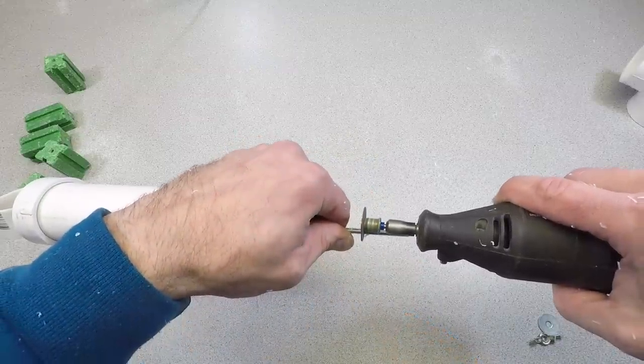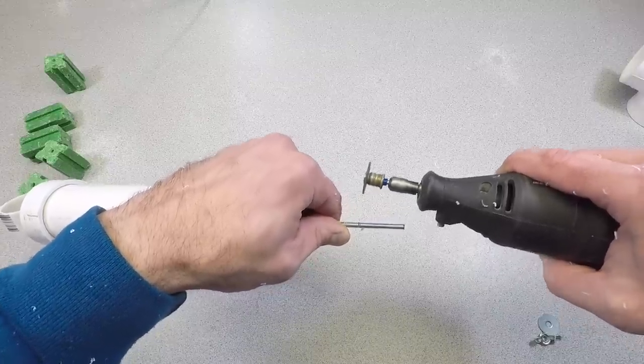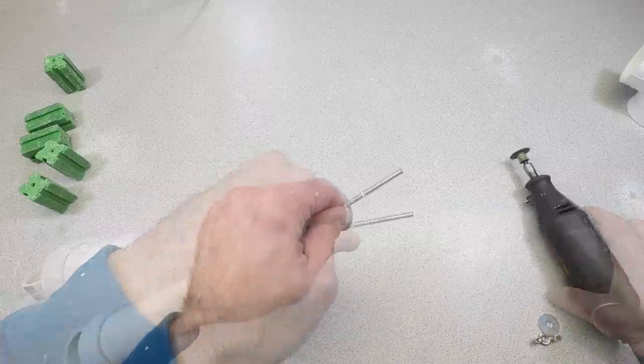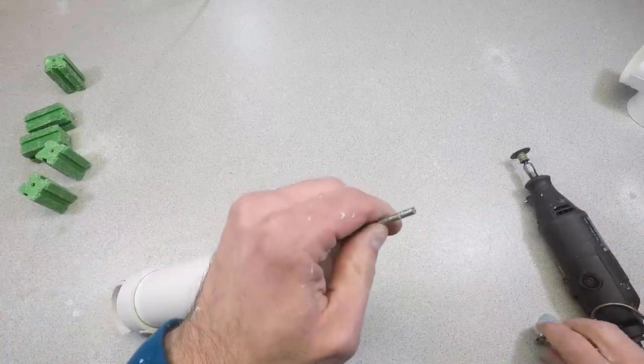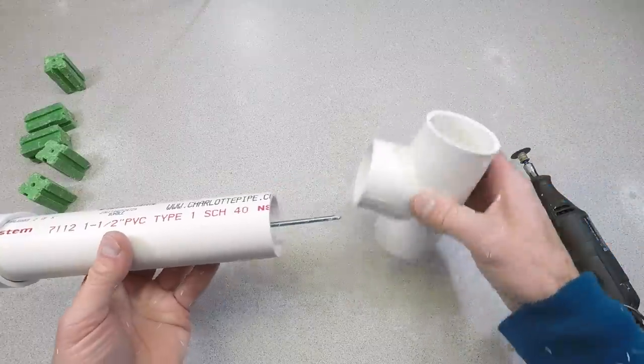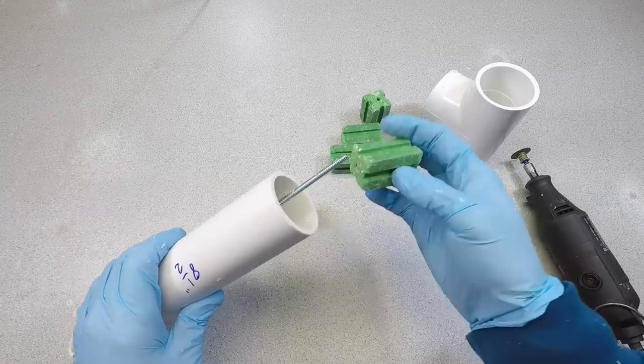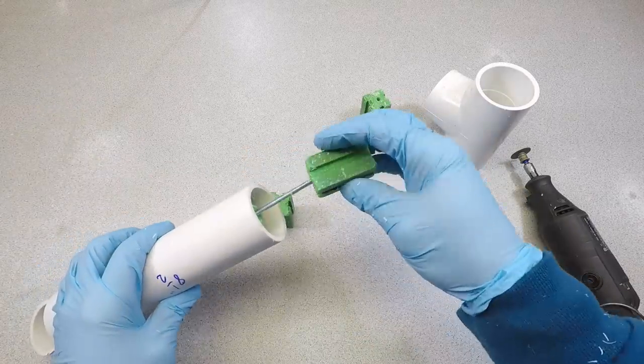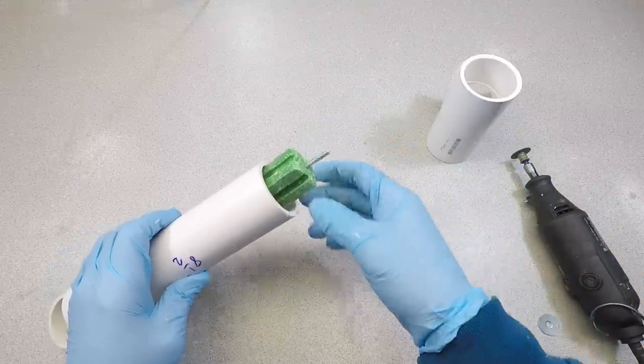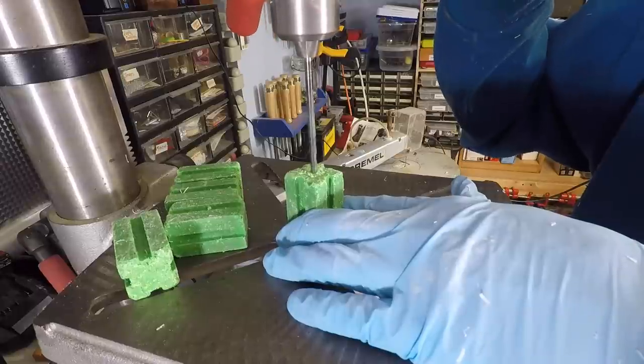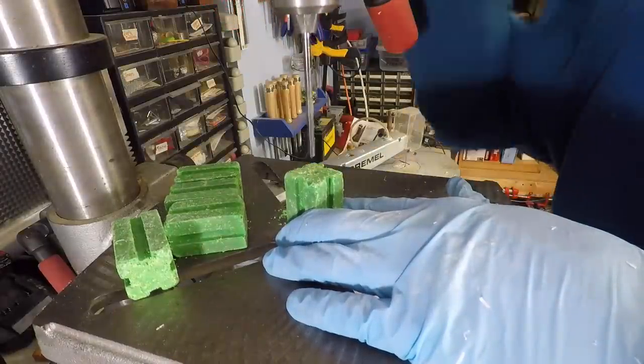I'm using a Dremel tool with a cut-off wheel, or you can use a hacksaw. Slide your bait blocks onto the threaded rod. The blocks I purchased didn't have a hole in the middle, but I pre-drilled my own. Now, just take your time and clean out the hole as you drill to avoid splitting the block.